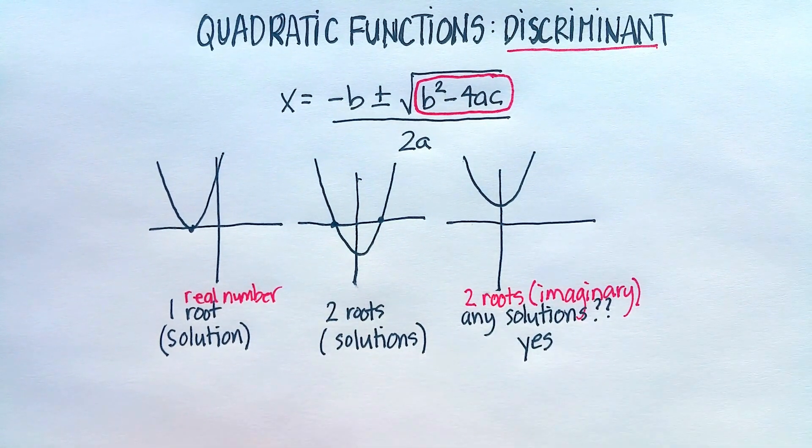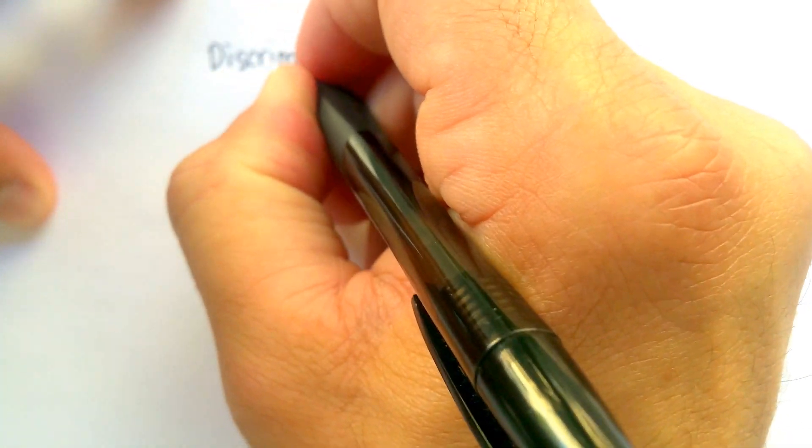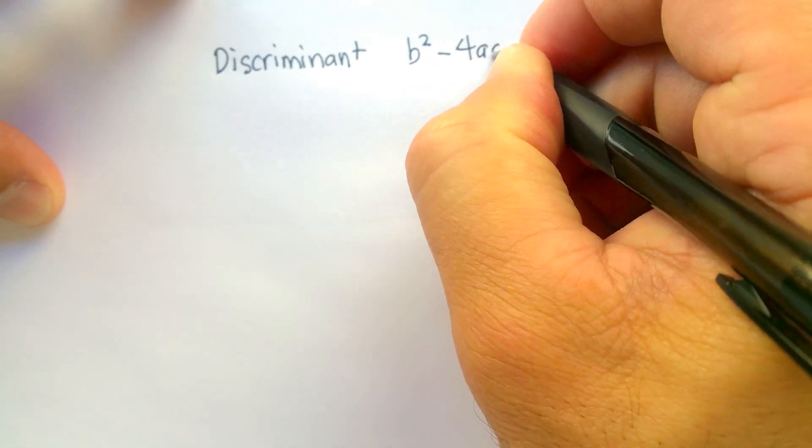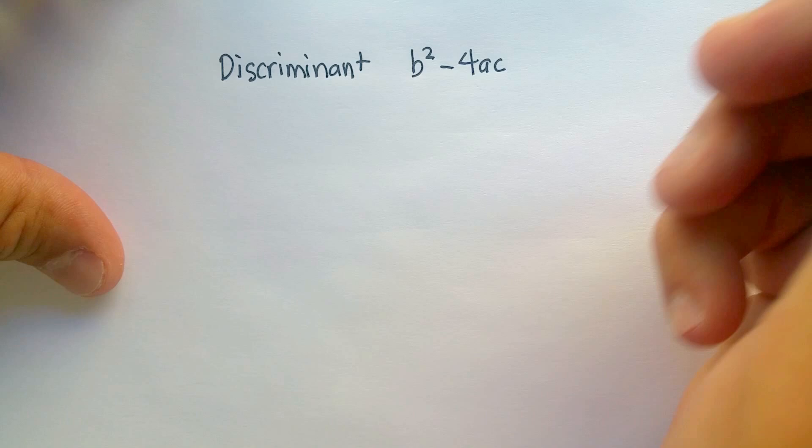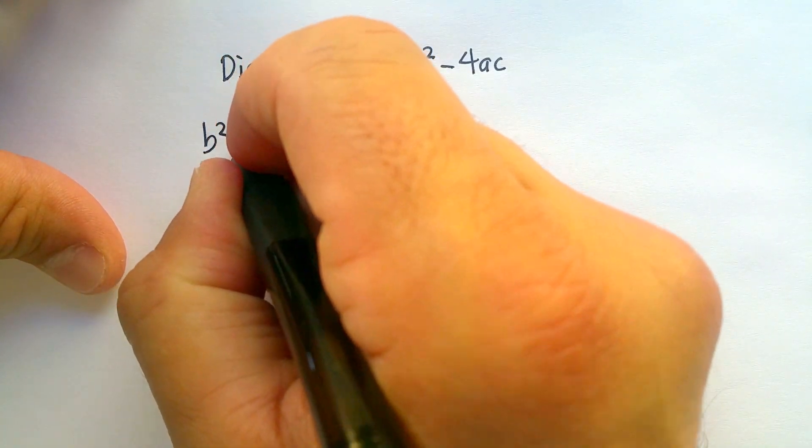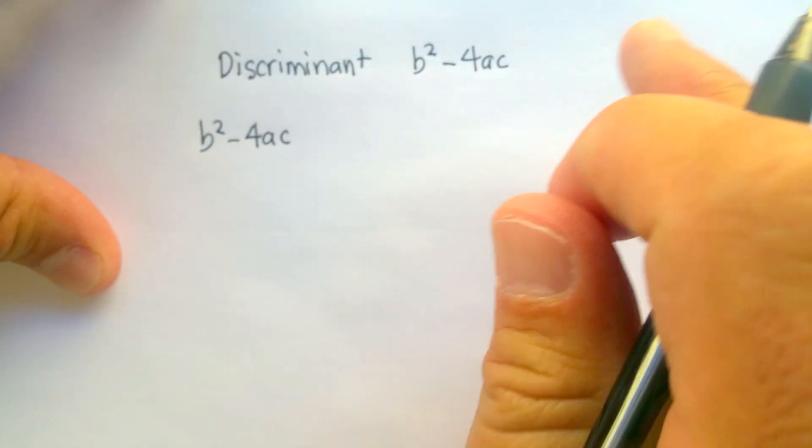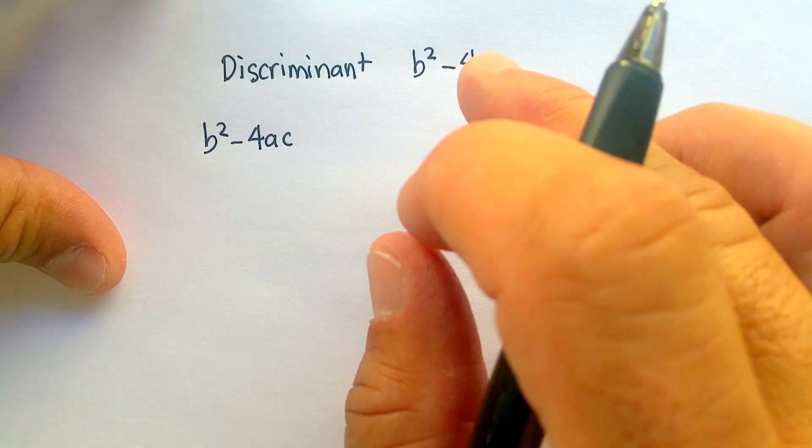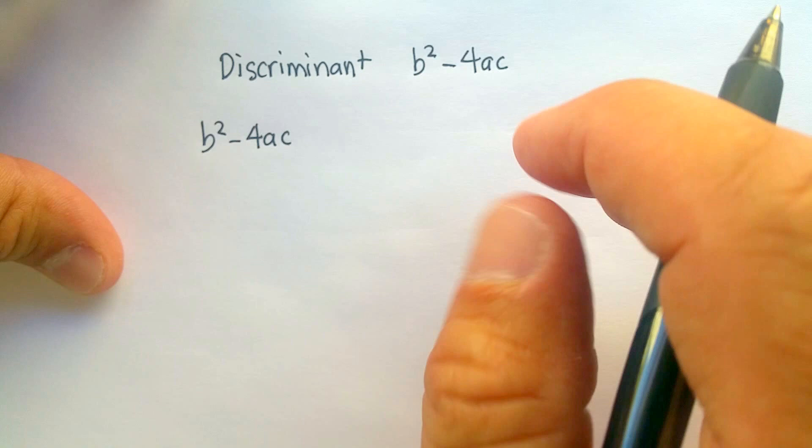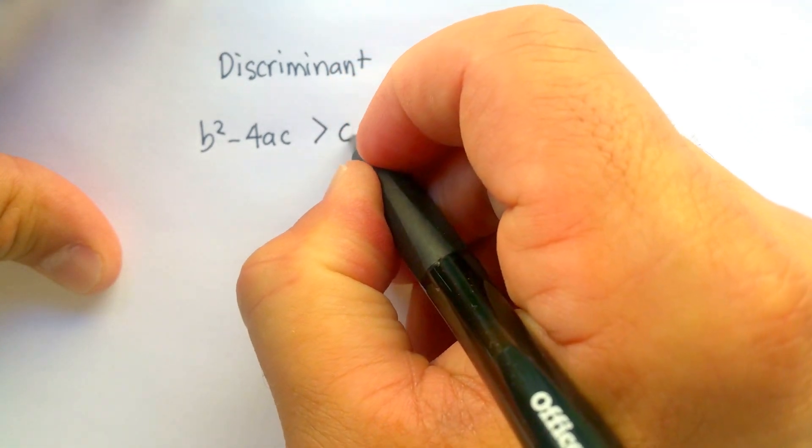The discriminant is this formula right here. So again, the discriminant is b² - 4ac. Now when b² - 4ac for any standard form of a quadratic - remember, quadratic term, linear term, and constant - when it is greater than zero, you're going to have two real roots.